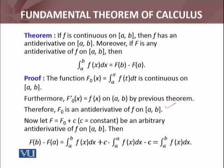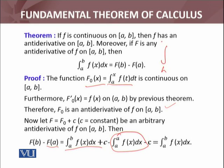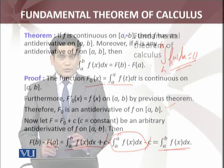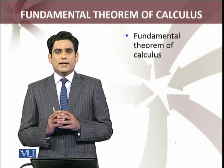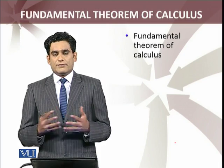Now let F be an arbitrary antiderivative of f on [a,b], which is F₀ plus c for some constant c. Then F(b) minus F(a) equals (F₀(b) + c) minus (F₀(a) + c). F₀(a) is the integral from a to a of f(x) dx, which is zero. So the c's cancel out, and we get the integral from a to b of f(x) dx. So we have defined the antiderivative and stated and proved the fundamental theorem of calculus using the definition of antiderivative.